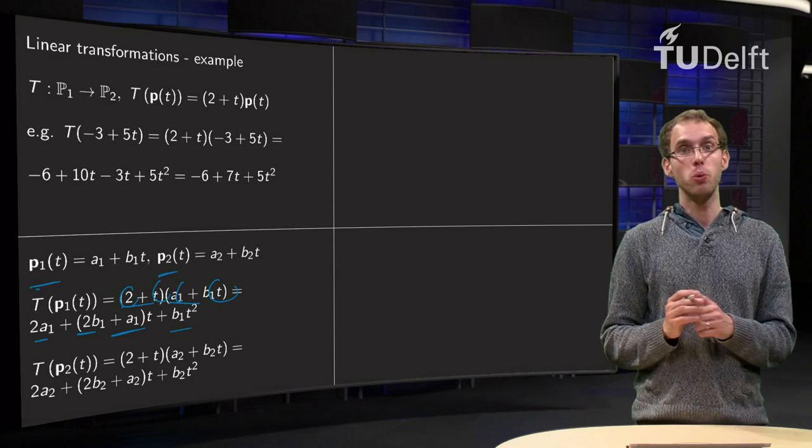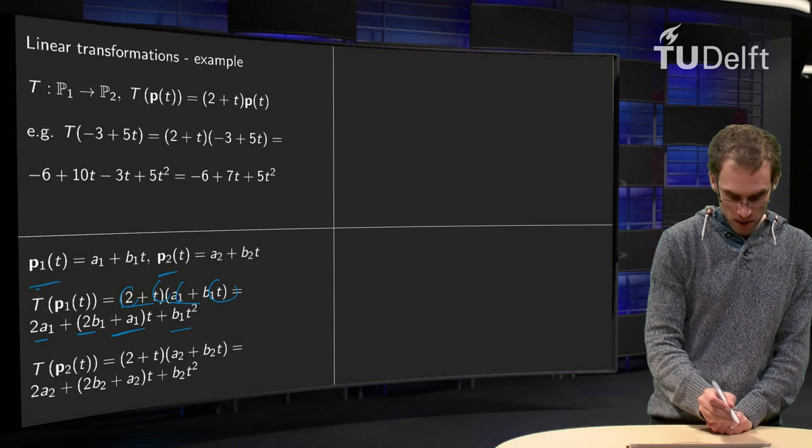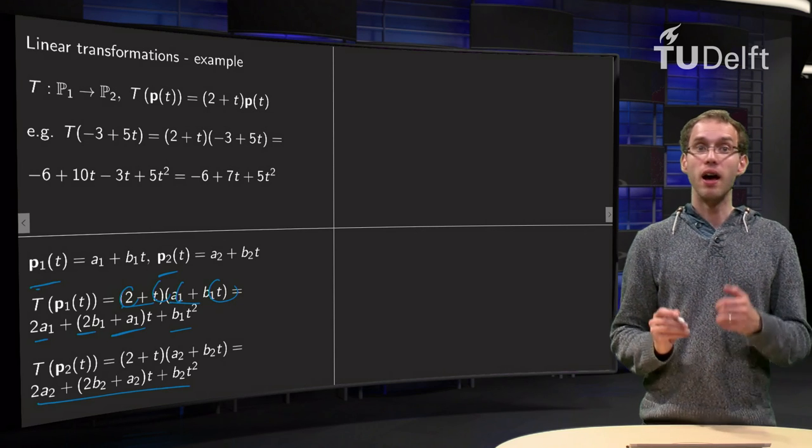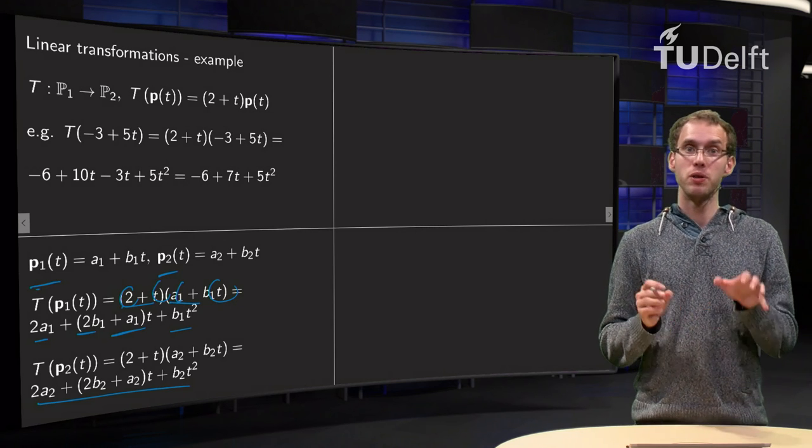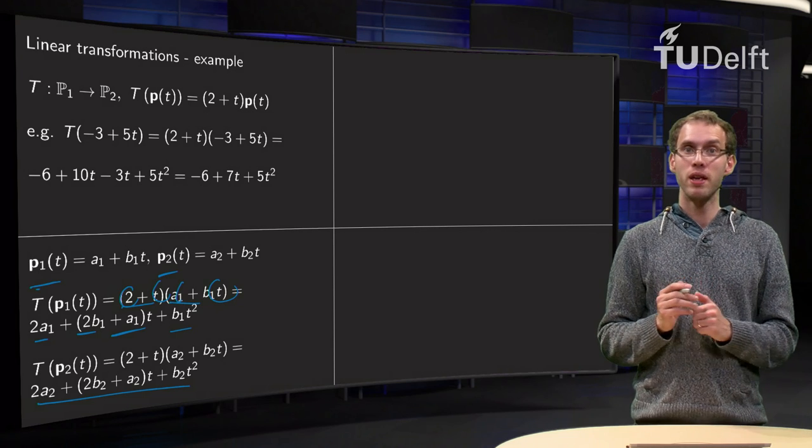And we do the same for the other one, the image of P2, of course exactly the same, but now with the ones replaced by twos. There we have the T of P2.